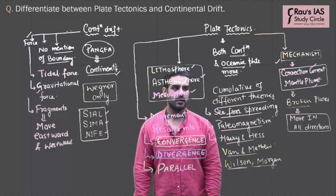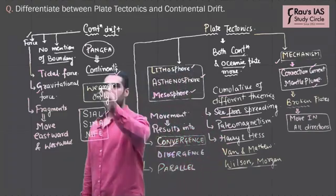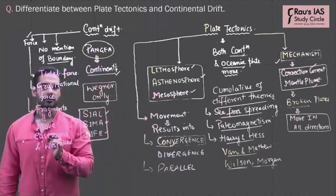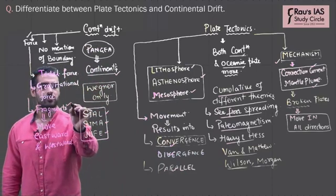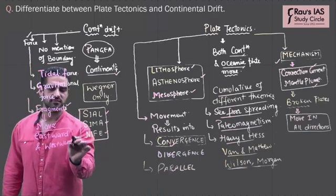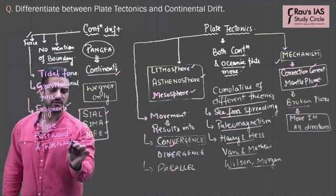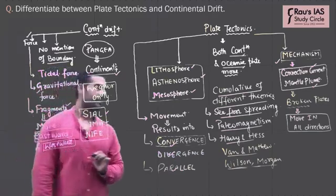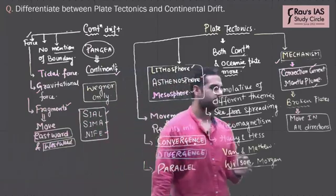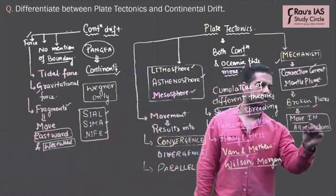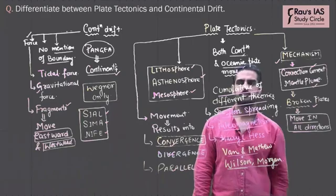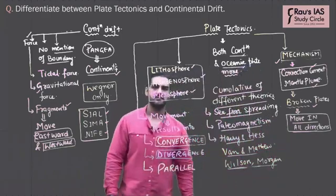According to the continental drift theory, the fragments, the broken fragments of continent, move either eastward or westward, whereas plate tectonics theory explains the broken fragments move in all directions.